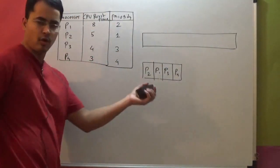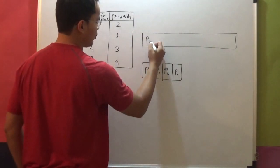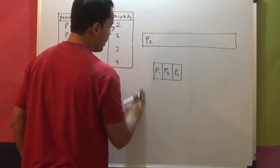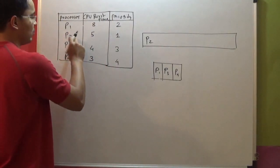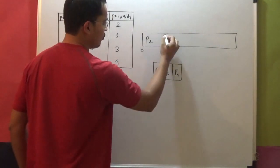So as they go into the queue, they get the CPU. So first P2 gets it. How much is the requirement of P2? 5. So from 0 to 5, CPU is occupied by P2.